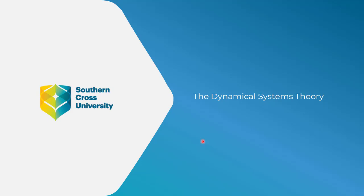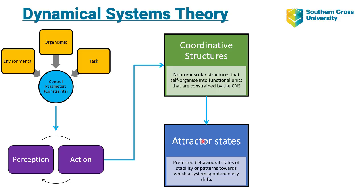Hello and welcome to our brief explanation of the dynamical systems theory. The dynamical systems theory is an approach to describing and explaining the control of coordinated movement that emphasises the role of information in the environment, the dynamic properties of the body and limbs, and how that relates to the task at hand. We have three elements: environmental, organismic, and task constraints, controlled by our neuromuscular system to produce behaviour.